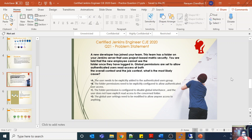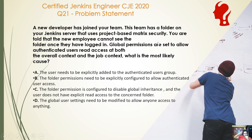Hello everyone, welcome back to CJ 2020. This is question number 21 of the certification catalyst series dedicated to the Jenkins certification exam for 2020. A new developer has joined their team. The team has a folder on a Jenkins server which uses project-based matrix security. You are told that the new employee cannot see the folder once they have logged in. Global permissions are set to allow authenticated users read access at both the overall context and the job context. What is the most likely cause?